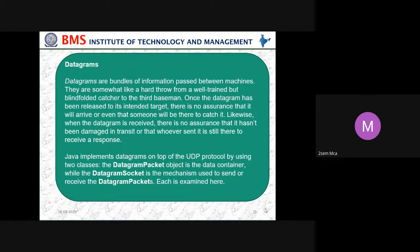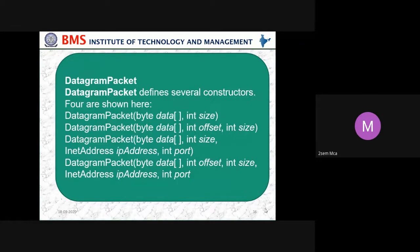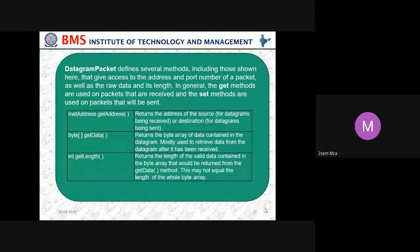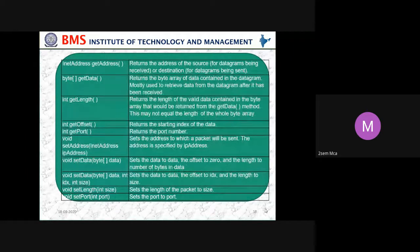Datagrams are bundles of information passed between machines. The different constructors include: DatagramPacket with byte data and size; DatagramPacket with byte data, offset, and size; DatagramPacket with data, size, and InetAddress. Methods include getAddress, getLength, getOffset, getPort, setAddress, setData, and setPort.